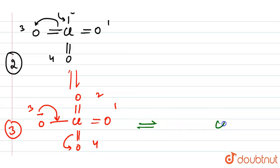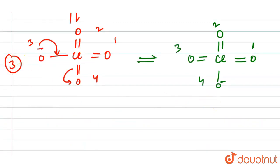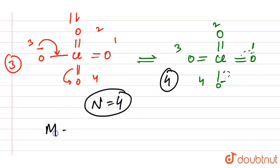All structures are similar — we just shift the bond. So here we have O minus and double bond O arrangements. When this bond moves again, we get the same structure as the first one, meaning this is our fourth resonating structure. So n equals 4 and m equals 7/4.